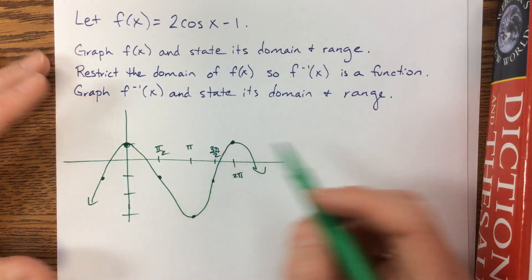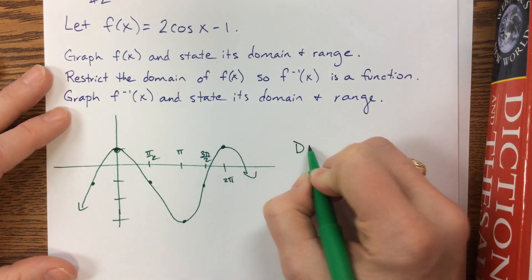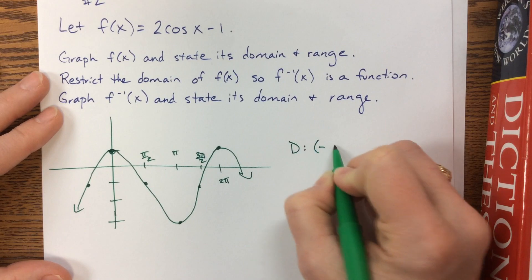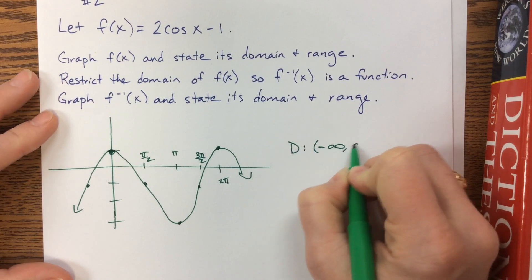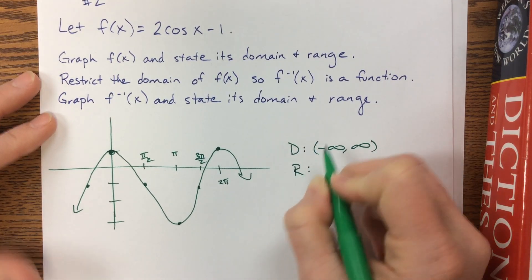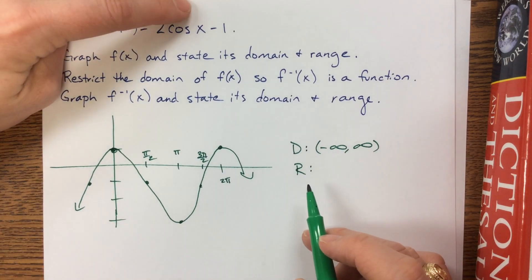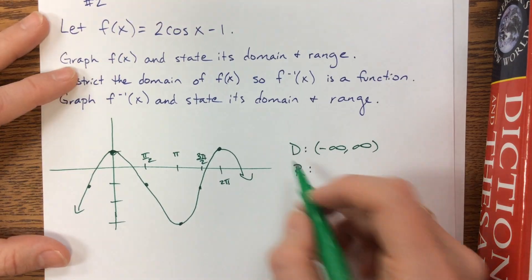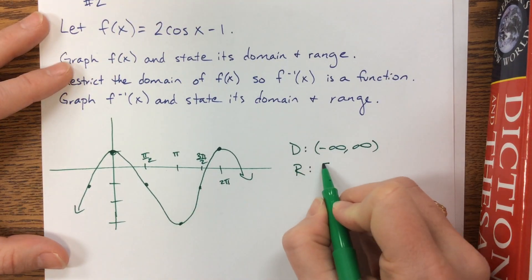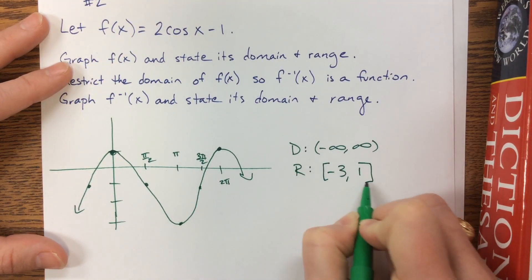We know that our domain is all real numbers. And our range now, since we stretched it by a factor of 2 and then shifted it down 1, we're now going from negative 3 to positive 1.